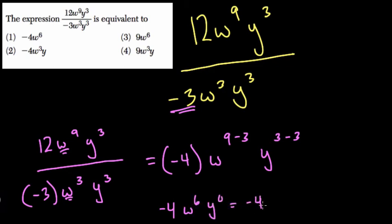Which is equal to negative 4w to the 6th, because y to the 0 is just 1. And you might recognize it here. We just subtract these two exponents, but really we have y to the 3rd over itself. Anything over itself cancels out, because anything divided by itself is 1, and that will not affect your division or multiplication. So it cancels out, it goes away.